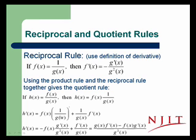Plugging in the reciprocal rule for the 1 over g of x derivative, we find minus f of x times g prime of x over g squared of x, plus f prime of x over g of x. Just giving a common denominator and reversing the order of the terms gives us the usual formula, g of x times f prime of x minus f of x times g prime of x over the denominator g of x squared.